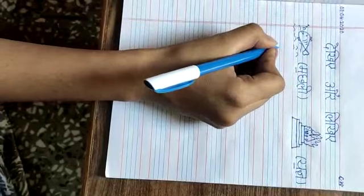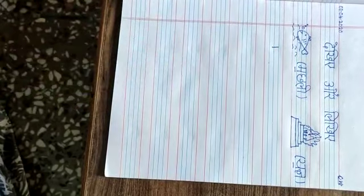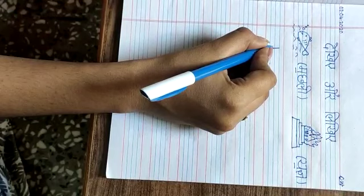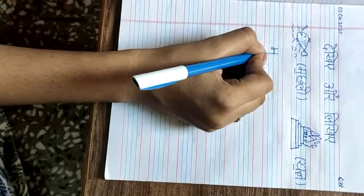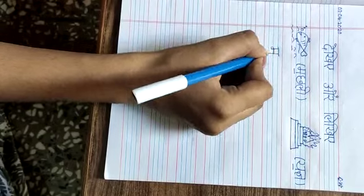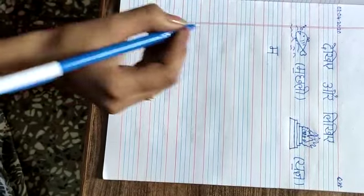First we will make a standing line like this, then we will make a curve, then a sleeping line, then a standing line. That's how we will make Ma Se Machli again.